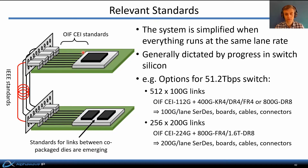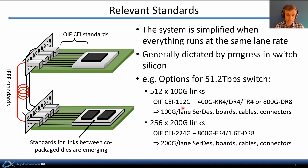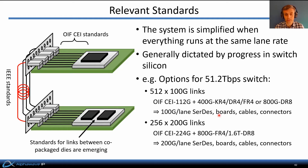For example, consider a couple of different options for a 51.2 terabit per second switch. That switch ASIC could have 512 x 100 gigabit per second links, in which case you would have CEI standards at 112 gigabits per second combined with one or another Ethernet standard that operates at 100 gigabit per second per lane — a few examples are listed here. In a system like that, you would have 100 gigabit per second lane SerDes combined with boards, cables, and connectors all designed to achieve adequate signal integrity at 100 gigabit per second per lane.